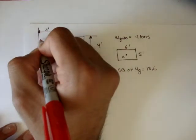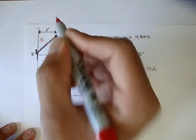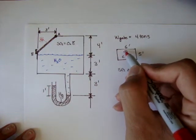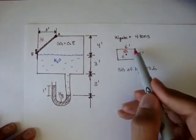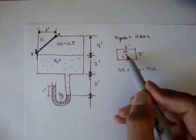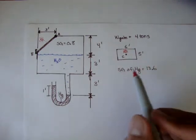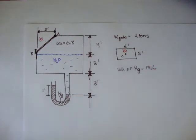I'm going to draw this little eyeball. This eyeball is looking straight at the gate, and this is what the eyeball sees. It sees a 6 foot by 5 foot gate, and the centroid is obviously there. And the problem also gives us that the specific gravity of mercury is 13.6.